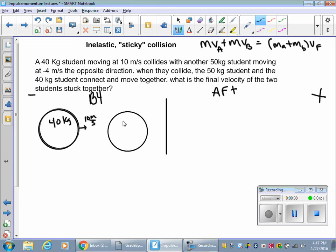So we got 10 meters per second. Collides with the 50 kilogram student. So there's 50 kilogram moving at negative 4 meters per second in the opposite direction. Negative 4 meters per second.